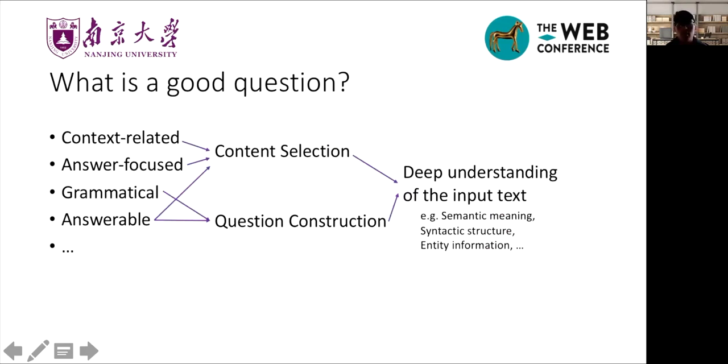After knowing the QG task in general, let's discuss what a good question is. A good question contains many characteristics. For example, a good question should be context-related. If a generated question is irrelevant to the input context, it might be useless. If its answerability is not good, which means the question cannot be answered by others, this question might be meaningless.